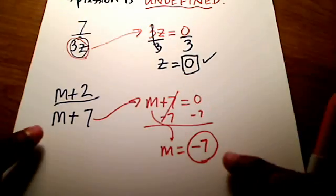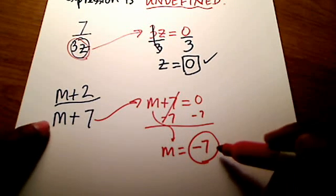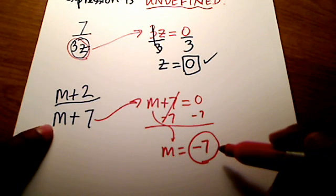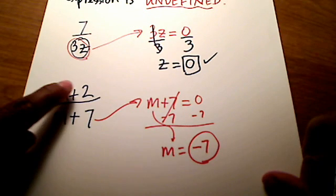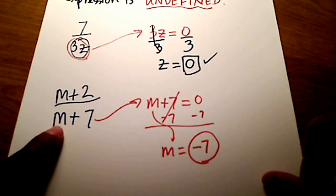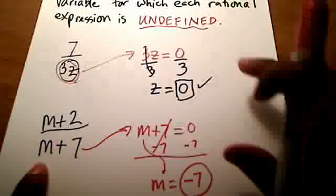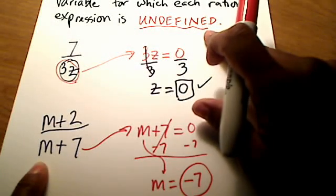If m is negative 7 and I plugged it into this expression, negative 7 plus 2 would make my numerator negative 5. But do you see that it would turn my denominator into a zero? And we cannot divide by zero. That's what would make my expression undefined.